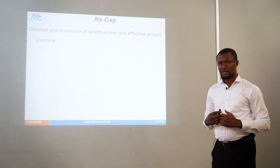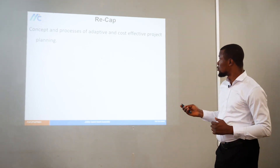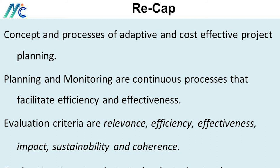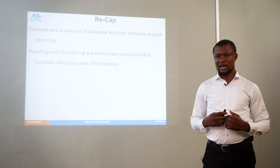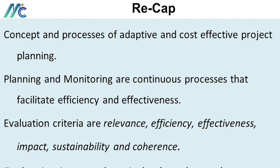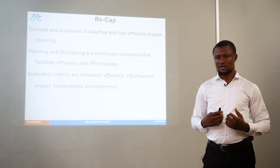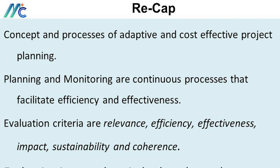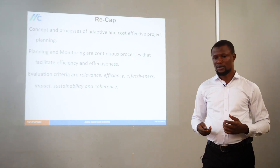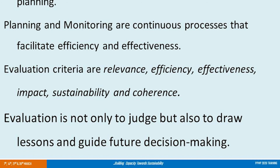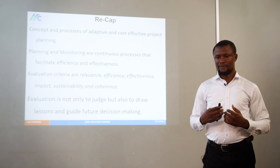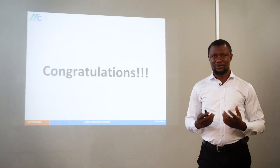Let's recap what we've learned today. We've talked about the concepts and processes of planning your project in a cost-effective and adaptive manner. We've also talked about planning and monitoring as continuous processes that facilitate effectiveness and efficiency. We learned about evaluation criteria: relevance, effectiveness, efficiency, coherence, impact, and sustainability. We also learned that evaluation is not only to judge, but also to draw lessons and guide future decision making. Congratulations — you have come to the end of this module.